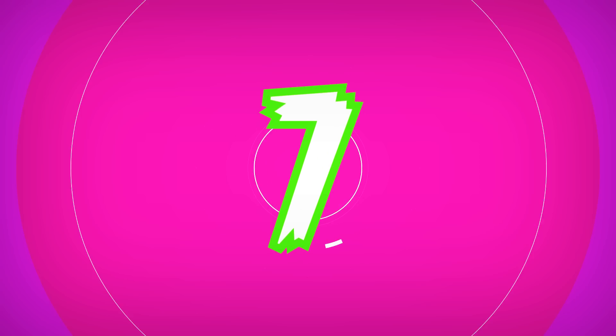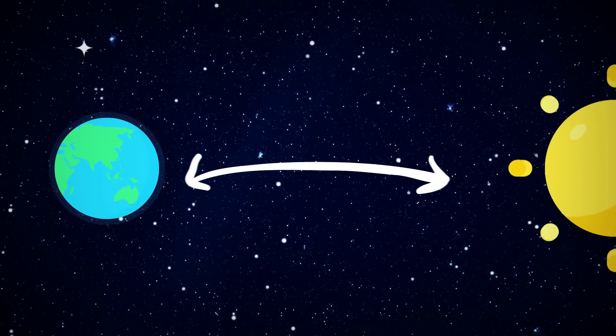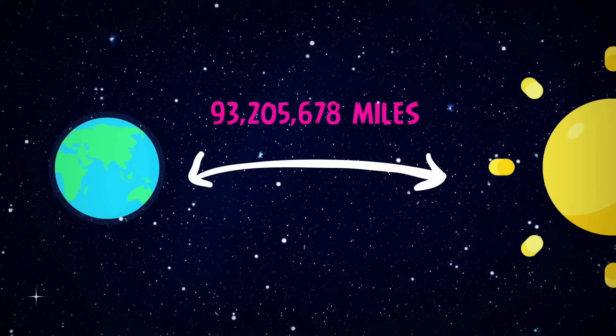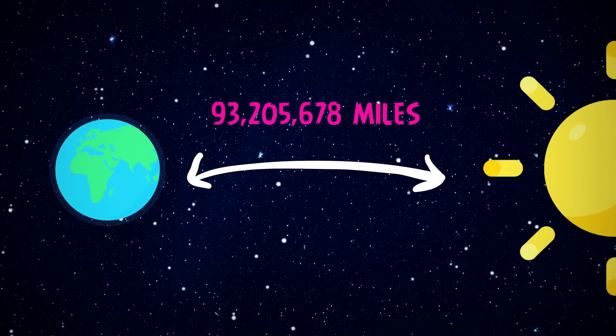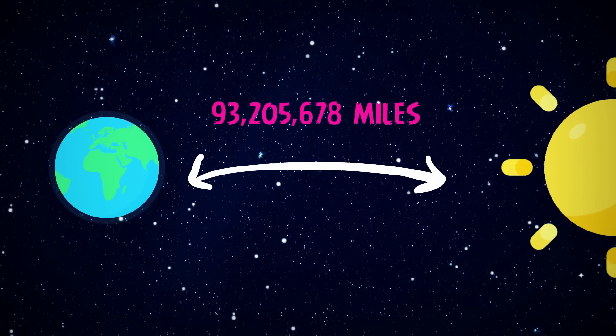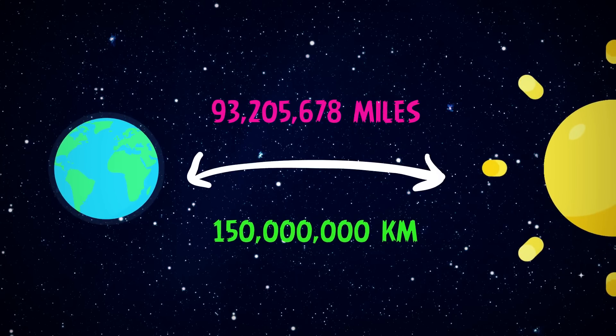Number 7. Now let's talk about distance. The sun is about 93,205,678 miles or 150,000,000 kilometres away from the earth.